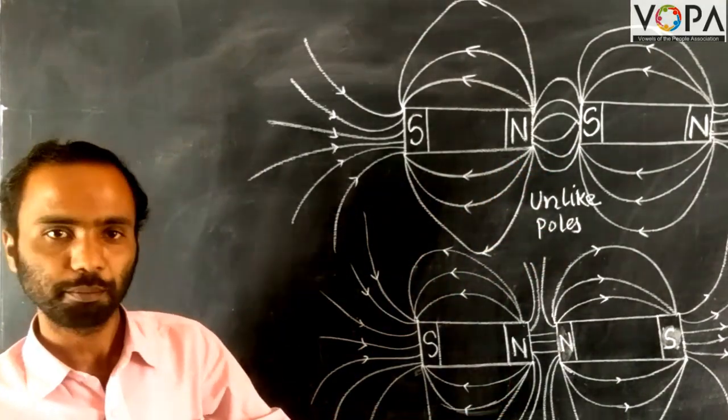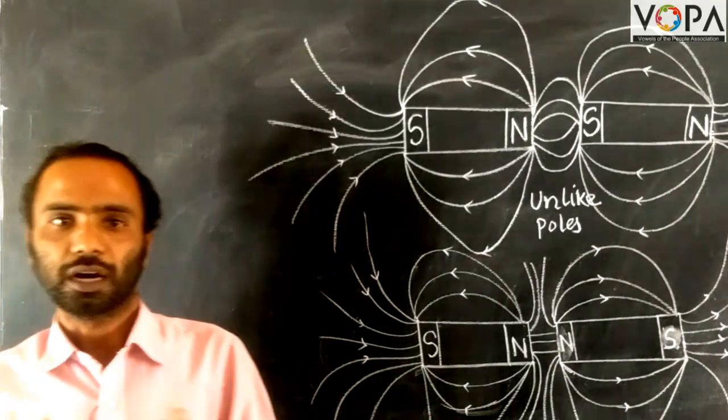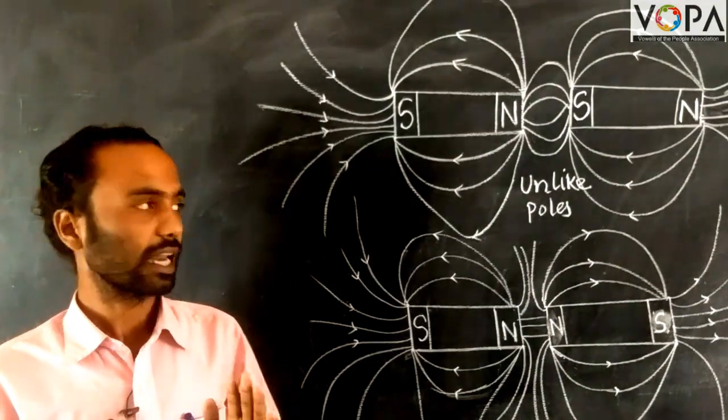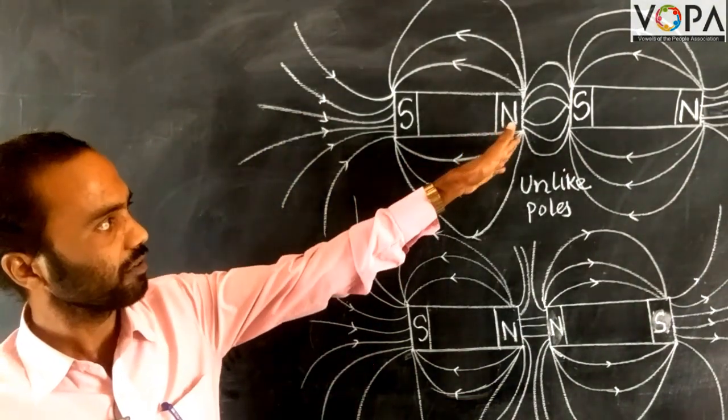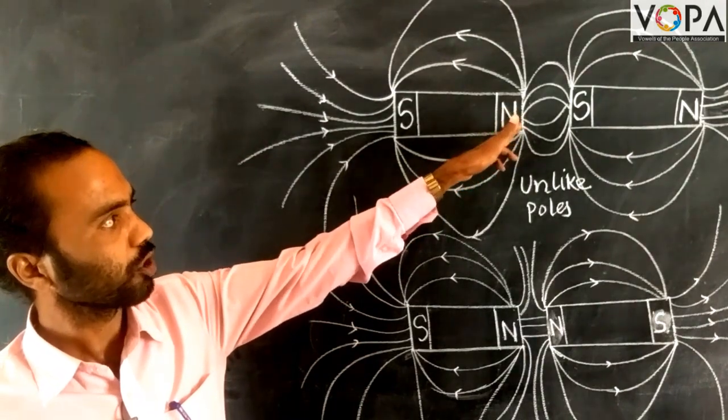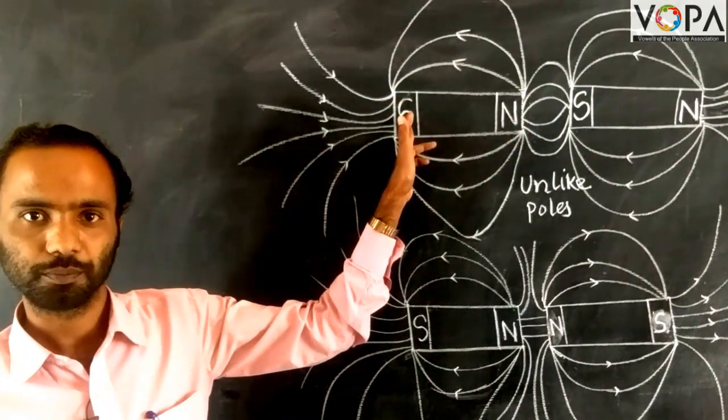A scientist, Michael Faraday, discovered these lines of force. These lines of magnetic force always travel from the north pole to the south pole.